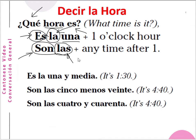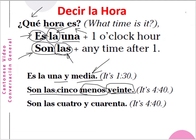Es la una y media — one and a half, media means half, so this is one thirty. Son las cinco menos veinte — menos means minus, veinte is twenty minutes, so son las cinco minus twenty is four forty. You can also say son las cuatro y cuarenta — they are four and forty minutes.